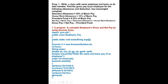Write a class with the name 'employee'. The employee name and basic pay are its data members. Find the gross pay for an employee for the following allowances and deductions: dearness allowance (DA), house rent allowance (HRA), and provident fund (PF). Net pay equals basic pay plus DA plus HRA, and gross pay equals net pay minus provident fund. First we will write a program to calculate the employee's gross and net pay using the scanner class.